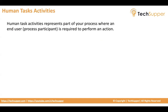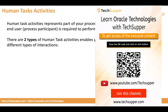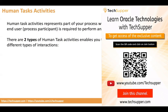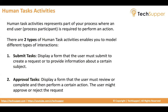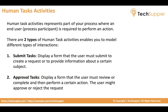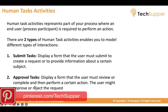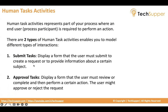Human task activities represent parts of your process where an end user or process participant is required to perform an action. There are two types: submit task and approval task. Approval task is used when you initiate an activity and it has to be assigned to your manager. The approval task shows the same form the user submitted, and the approver can approve, reject, or take other actions.